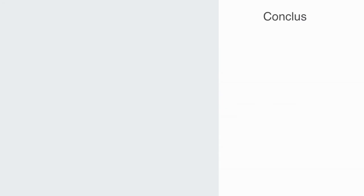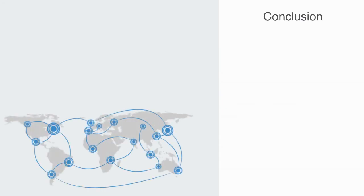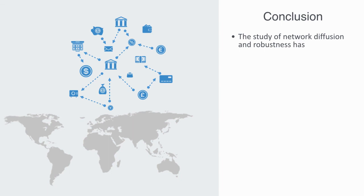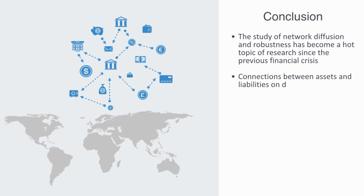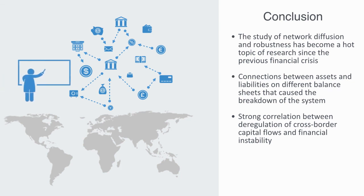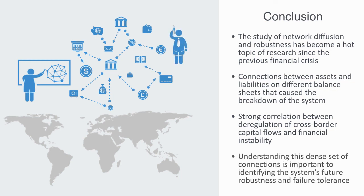We've only just begun to touch upon the subject of financial or economic network resilience, but we'll be talking about robustness in a future lecture. We'll just note that the study of network diffusion and robustness has become a hot topic of research since the previous financial crisis, as it became clear that it was the network of connections between assets and liabilities on different balance sheets that caused the breakdown of the whole system. And there's a strong correlation between deregulation of cross-border capital flows and financial instability. It has thus been recognized by many that trying to understand this opaque and dense set of connections is important to identifying the system's future robustness and failure tolerance.